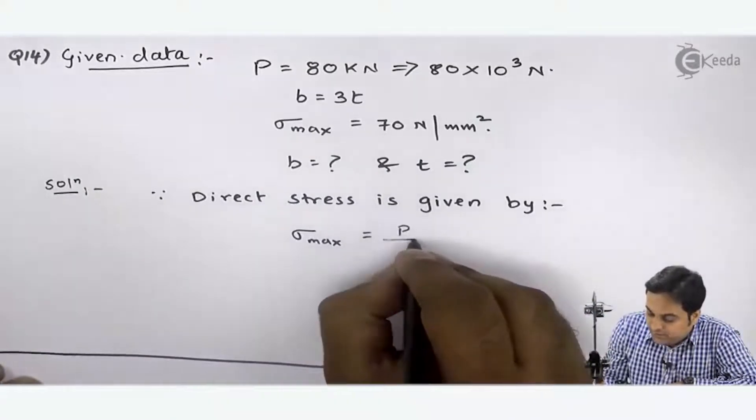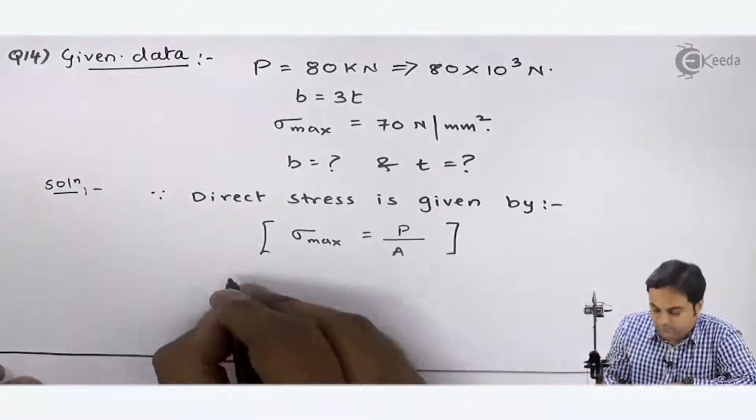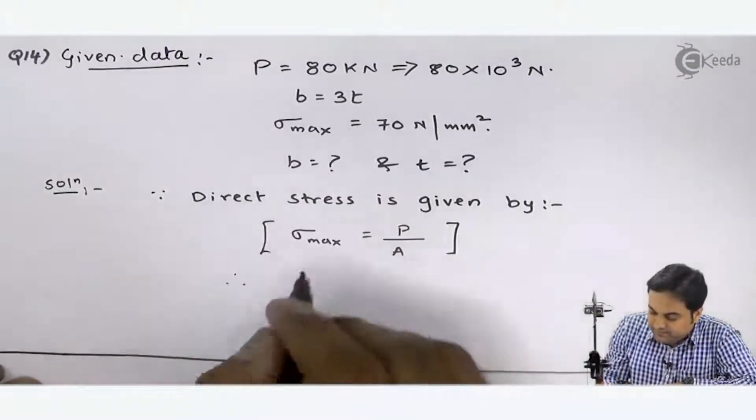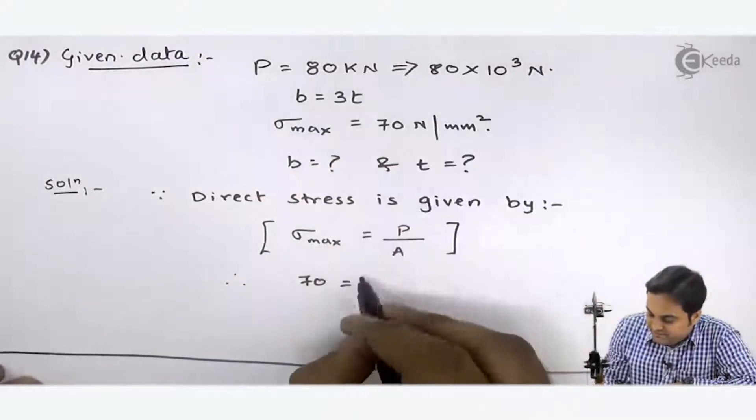Therefore, sigma max is 70, load is 80 × 10³, and capital A—it is rectangular—so here I have B × T.